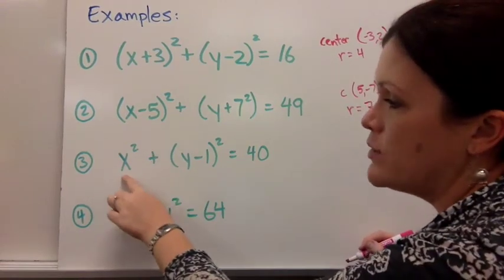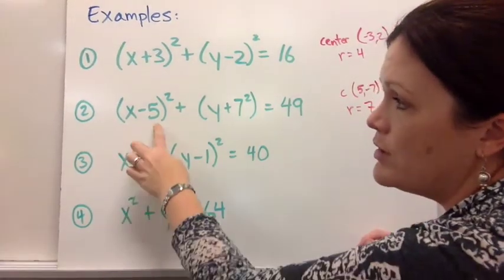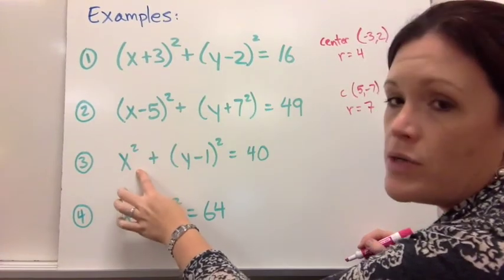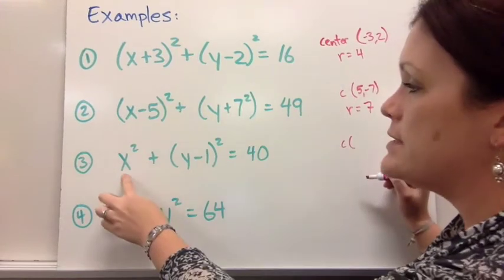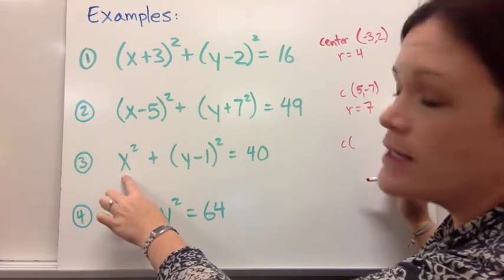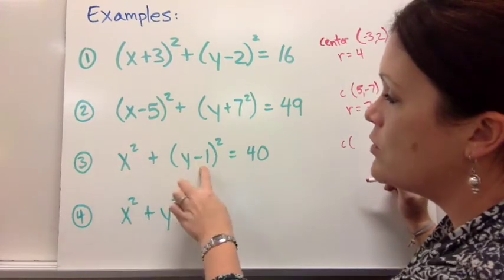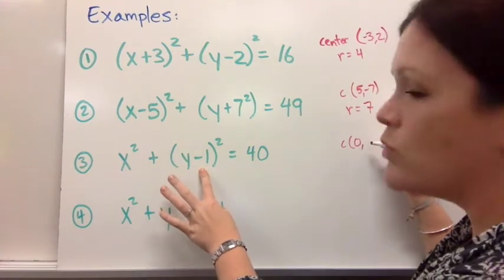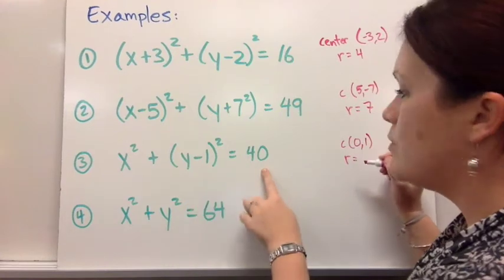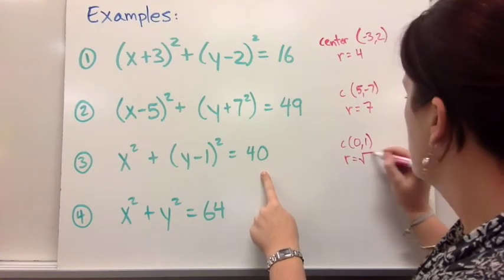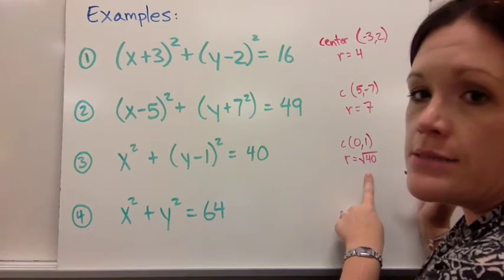Now what if we just have x squared by itself? You think about what number would have been there. The only number that could be represented right there would be a zero. So for this center point, we have zero because nothing else is with the x. The y-coordinate is one. You still pick out the one by changing that sign. And then the radius would be the square root of 40. You could either simplify that or just get a decimal.